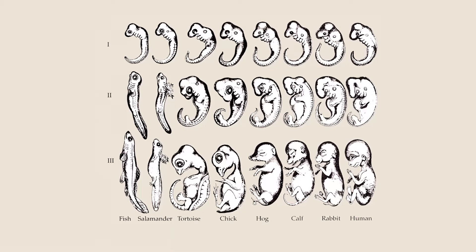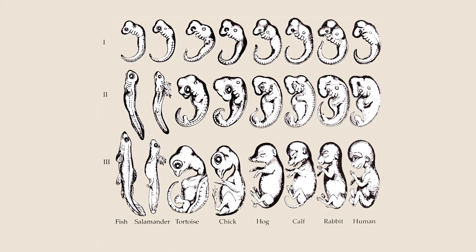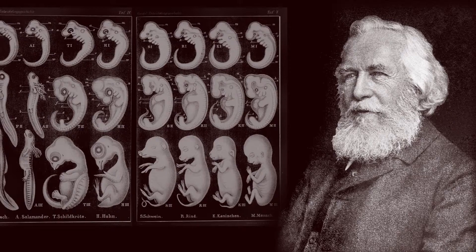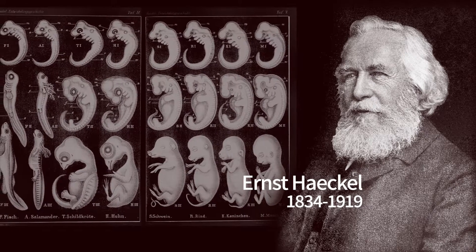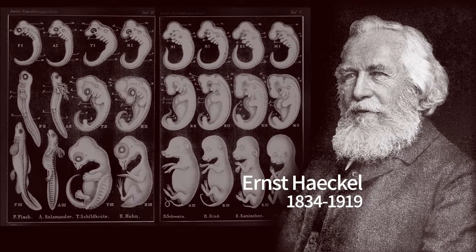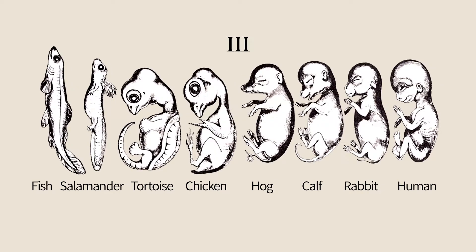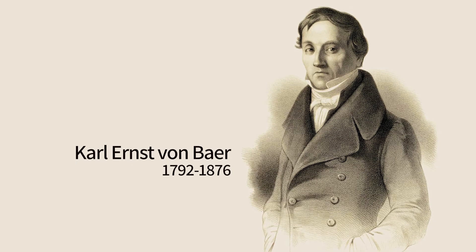In this drawing by Ernst Haeckel we can see a comparison of different animal embryos. Haeckel, who lived in the 19th century, suggested that embryonic development recapitulates evolution. For example, as human embryos have gills like those of a fish, he hypothesized that humans undergo a fish stage during their development. Haeckel's theory is no longer accepted today.